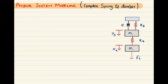Welcome to AD Academy. In this video we are going to solve a complex physical system model of a mechanical system that consists of two masses M1 and M2, two springs Ks and Kt, modified with the addition of a damper connected between M2 and the ground.